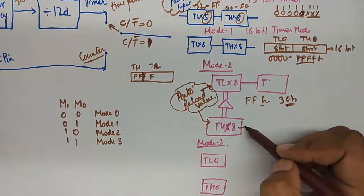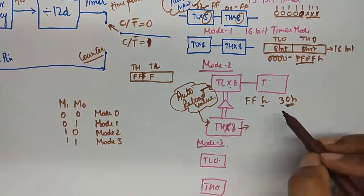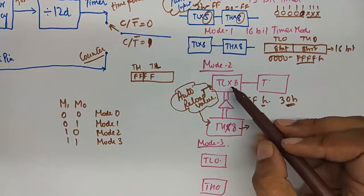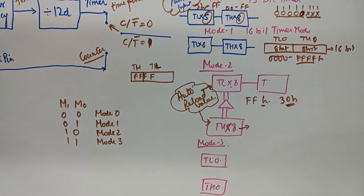And that auto reload value is kept safely stored in TH register. So this register does not participate in the counting process. It is safely storing a value which has to be put again and again into TL register whenever it overflows.